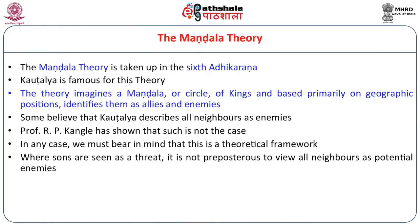Now we go to the other part of the book on how to win a kingdom. The important contribution of Arthashastra — not only to Indian literature and thought but to world literature — is its mandala theory. This theory, taken up in the sixth Adhikarana, imagines a mandala or circle of kings based primarily on geographic positions, identifies them as allies and enemies, and devises foreign relations strategy based on that. There is some division of opinion among authors on whether Kautaliya describes all neighbors as enemies; R. P. Kangle, who studied Arthashastra in greatest depth, opines that is not the case.